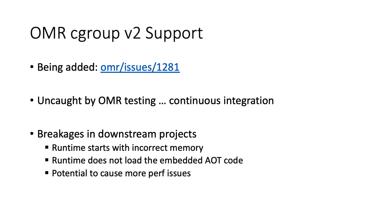Currently we are adding support for cgroup V2 in OMR, and OMR issue 1281 is being used for the high-level design discussion and as a global tracker for sub-tasks. The main issue is that missing cgroup V2 support was not caught by OMR testing through the PR builds. Diagnosing malfunctions of this API is challenging because failures are not logged — the process keeps running and can lead to performance issues that go unnoticed if the process is not continuously monitored. We have seen breakages in downstream projects, specifically OpenJ9: the runtime starts with incorrect memory, the runtime does not load the embedded code, and in some cases it has prevented customers from adopting OpenJ9.